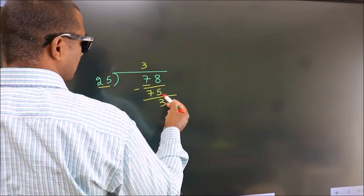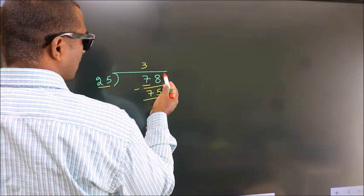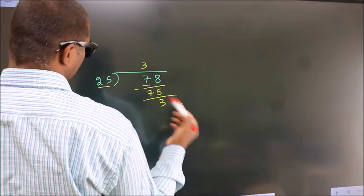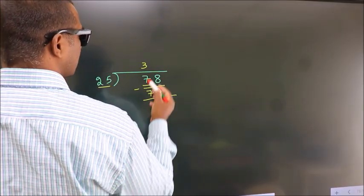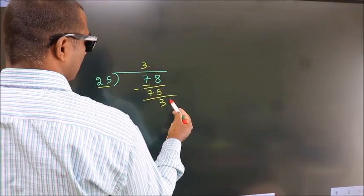After this, no more numbers to bring down. So what we do is we put a dot and take 0.